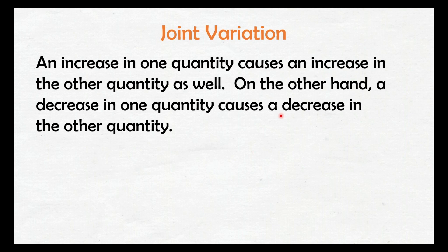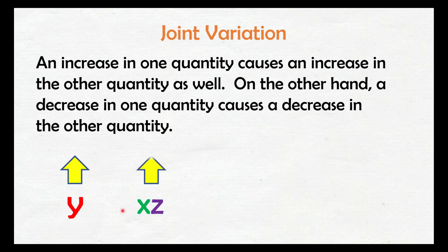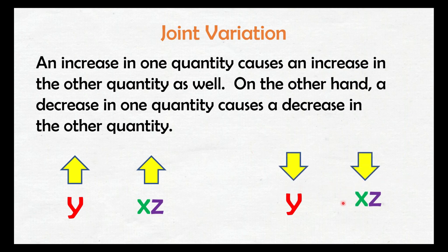Kagaya lang talaga siya ng direct variation. Ang kaso lang, nalagdagan yung mga variables natin or quantity. For example, yung quantity nating y at saka xz — kapag nag-increase daw yung y, tataas din itong mga quantities natin dito. At kapag bumaba na sa y, bababa rin yung mga quantities natin dito. So, same with direct variation.